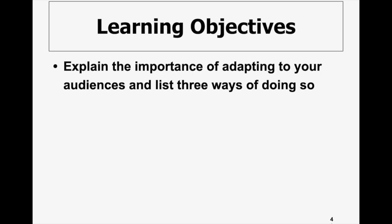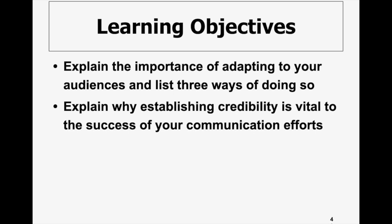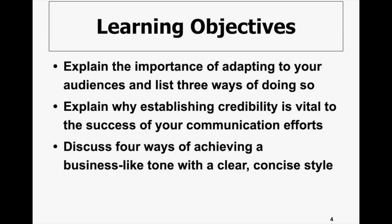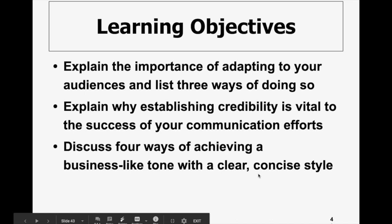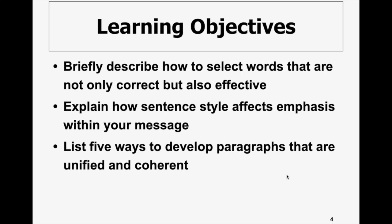The first objective is to explain the importance of adapting to your audience and list three ways of doing so. We covered this in the last lecture. Then we studied how to explain why establishing credibility is vital to the success of your communication efforts, and how you can achieve credibility.